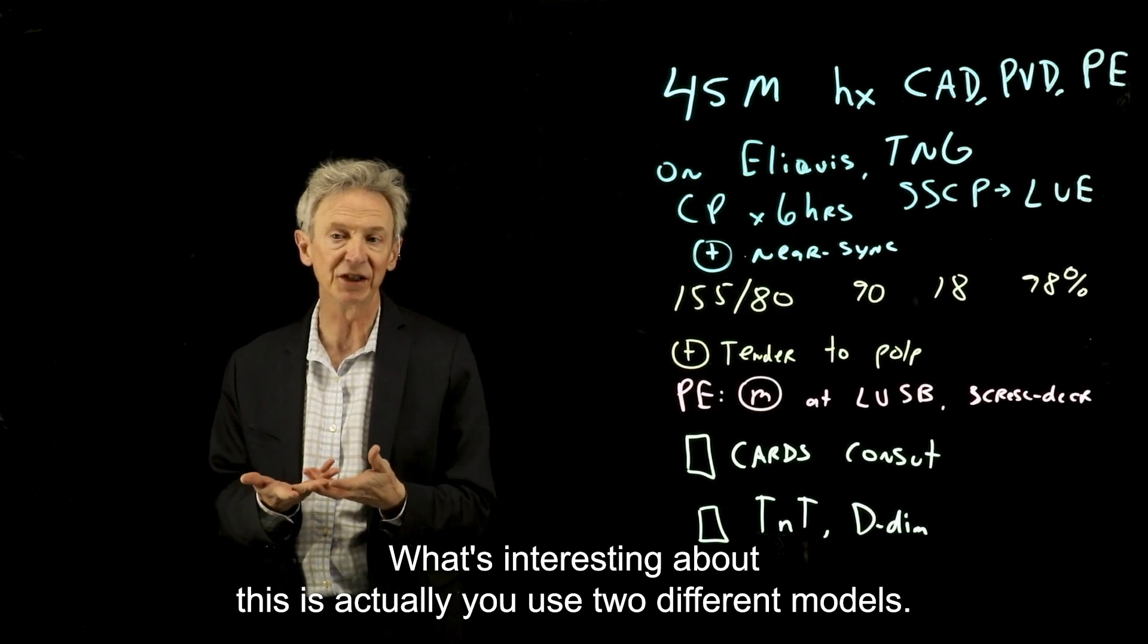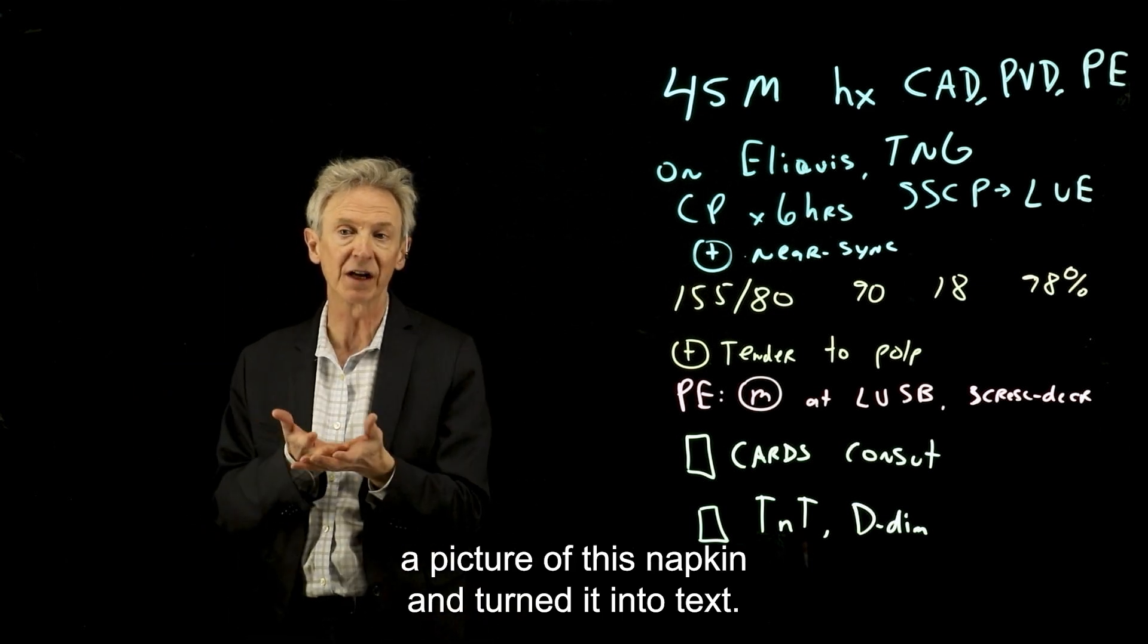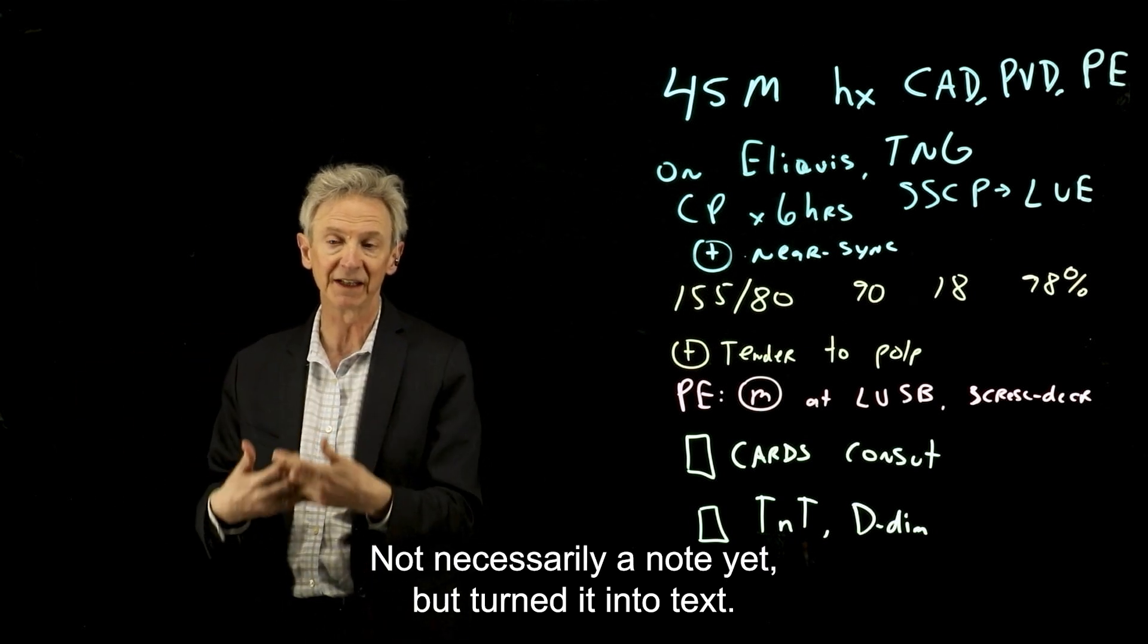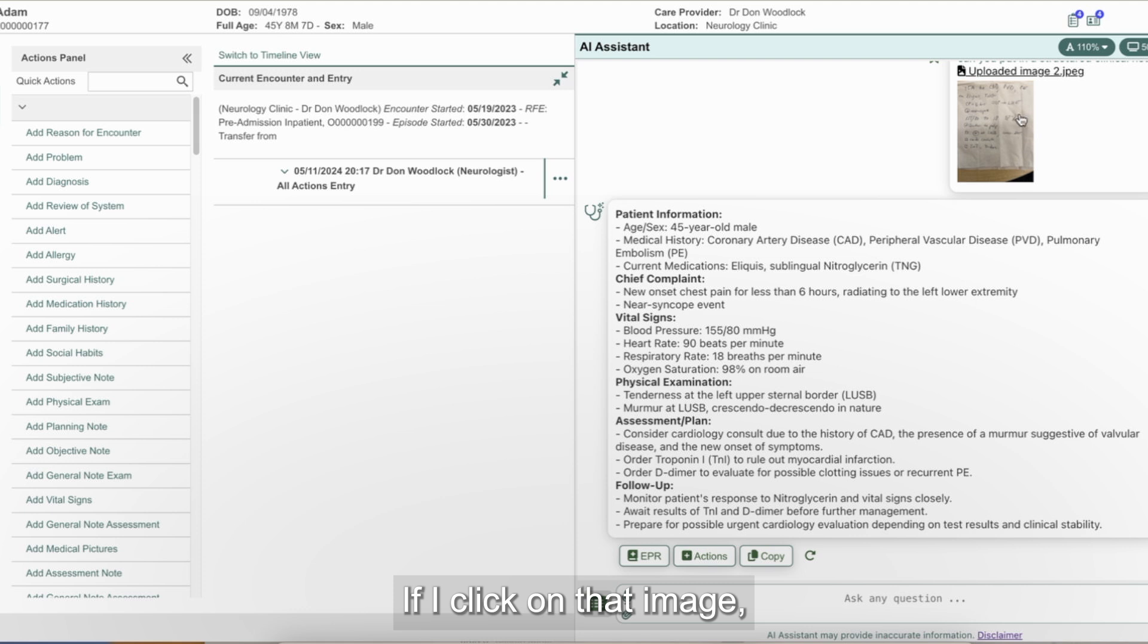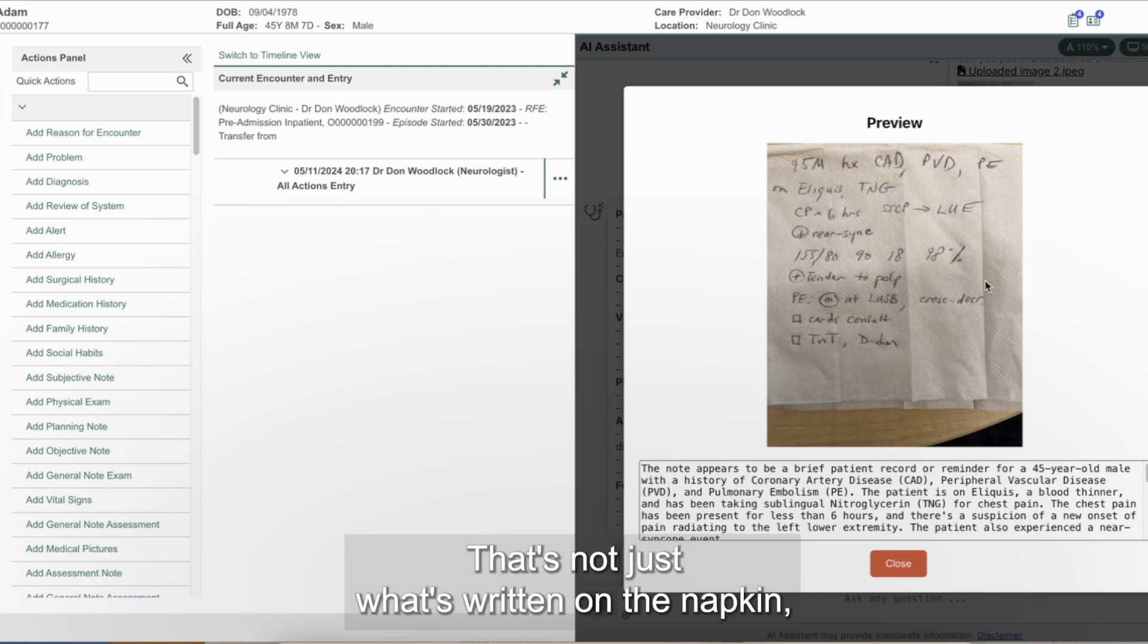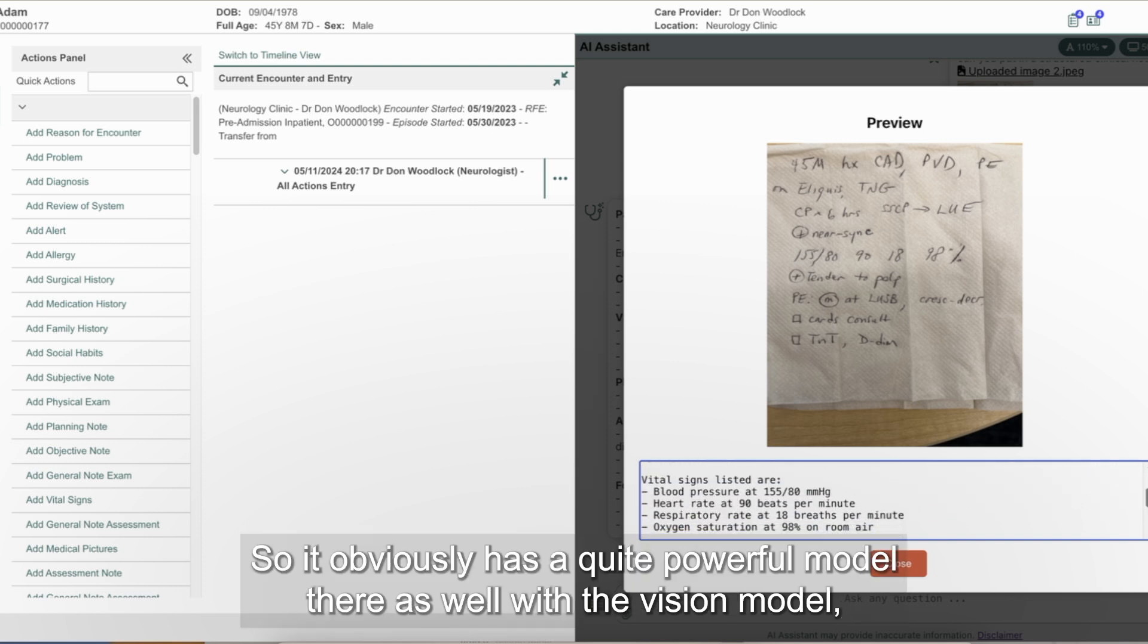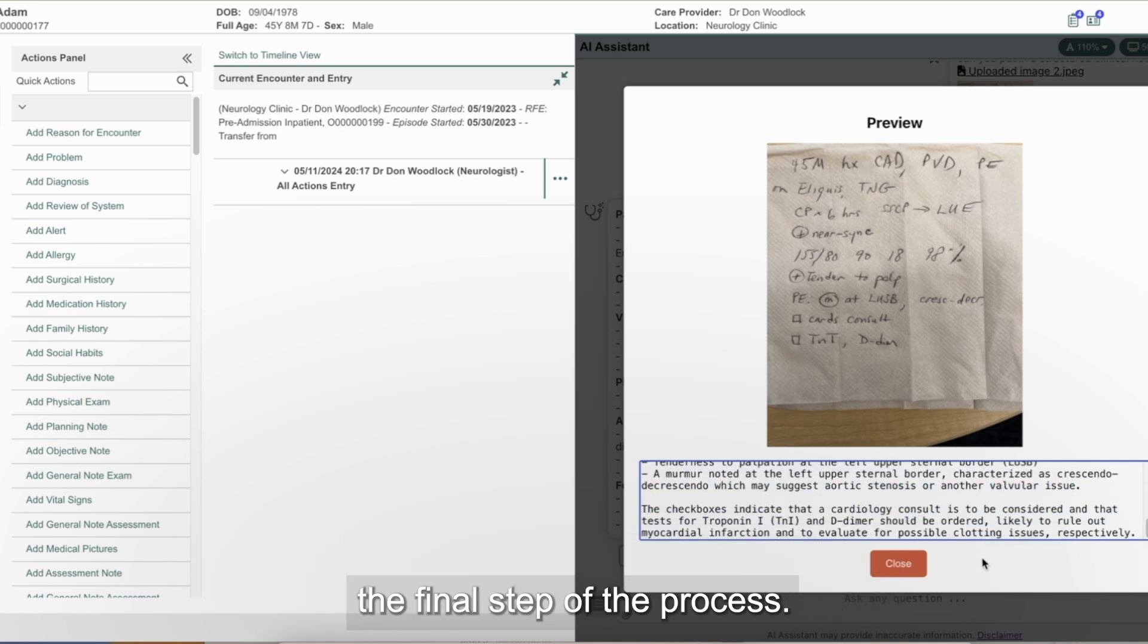What's interesting about this is actually used two different models. So the first model was a vision model, which basically took a picture of this napkin and turned it into text, not necessarily a note yet, but turned it into text. So I'll show you the interim outcome of that process now. If I click on that image, you can see actually this is the result of the interim model. So the note appears to be a brief patient record, a reminder. So it actually does generate a lot of text. That's not just what's written on the napkin, but it tries to fill out what it's seeing. So it obviously has a quite powerful model there as well with the vision model, but it's not structured as a clinical note yet. And that's the final step of the process.